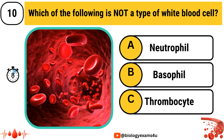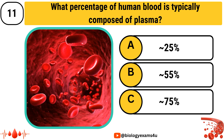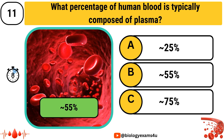The answer is Thrombocyte. What percentage of human blood is typically composed of plasma? The options are Option A: Approximately 25%, Option B: Approximately 55%, Option C: Approximately 75%. The answer is Option B, approximately 55%.